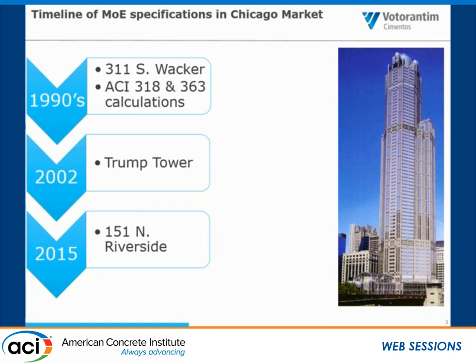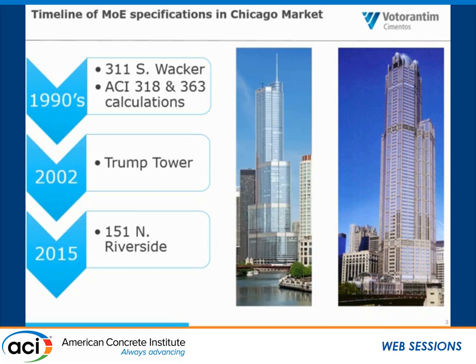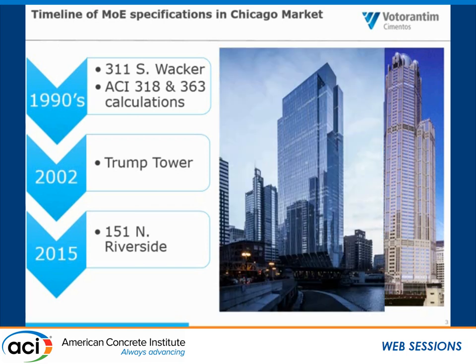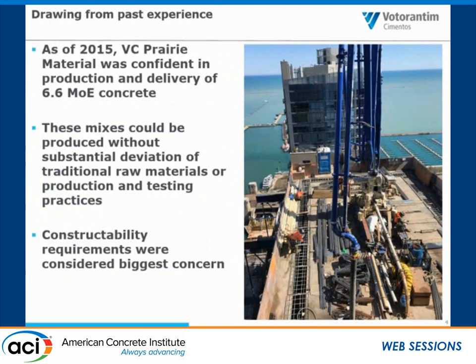In terms of completed projects, in 2015 we started a project at 151 North Riverside. You can see, thanks to that beautiful bottom of the structure, it required quite a bit of modulus of elasticity concrete. That was really us getting our feet wet again in this sort of specification, where modulus of elasticity was actively being tested throughout the span of the project. As of 2015, drawing from our past experiences, we were very confident that we could consistently deliver modulus of elasticity concrete with values up to 6.6 million. Both through 151 North Riverside and Trump, we knew our current high-strength and ultra-high-strength concrete would be comfortable meeting that sort of requirement.